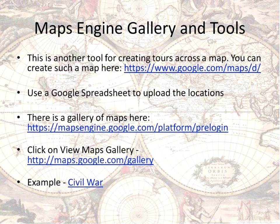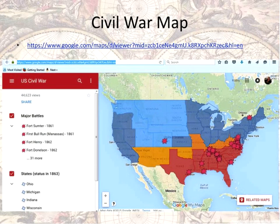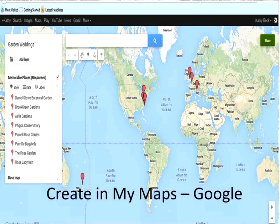The second tool I'm going to show is also from Google — it's called Maps Engine. I keep reading that they're going to discontinue this, which I'm really sad about. But I was able to create a new tour in Maps Engine just yesterday, so it is still functioning. What I really like about this is they have a gallery of already-created maps, and it utilizes a Google spreadsheet. One of the ones housed in their collection is a Civil War map in the United States showing locations of battles.